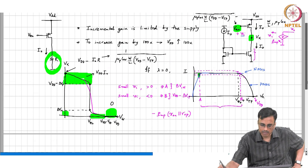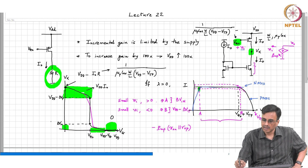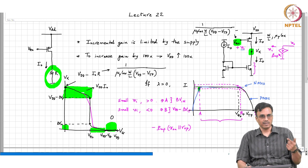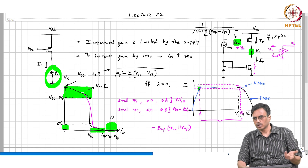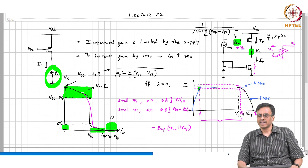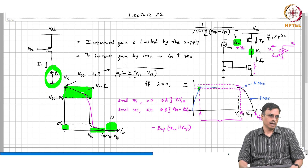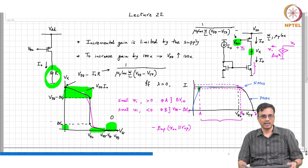Nothing prevents us from flipping the configuration around. Here the input was applied at the PMOS transistor and we had an NMOS current source. The same thing can be flipped: you can have input applied at the NMOS transistor side and the current source realized using a PMOS transistor.